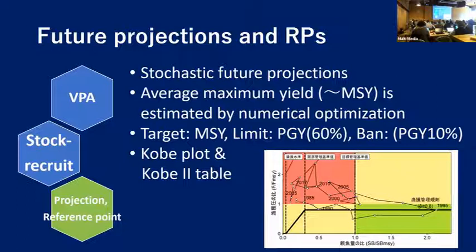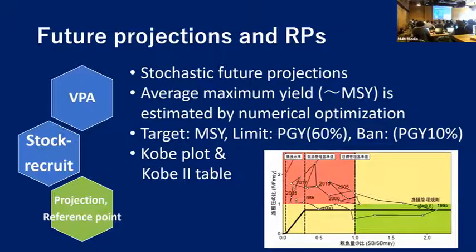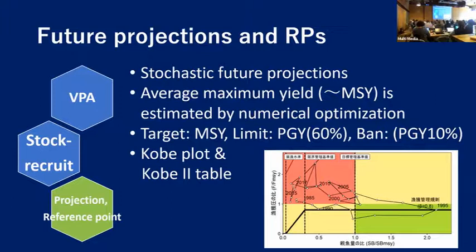This is the future projection part. In the future projection, we conduct stochastic future projections and estimate average maximum yield as MSY by numerical optimization. There are some reference points such as the limit reference point, which we currently define as PGY 64%, and FBAN is 10%. We also produce a Kobe plot and Kobe table.